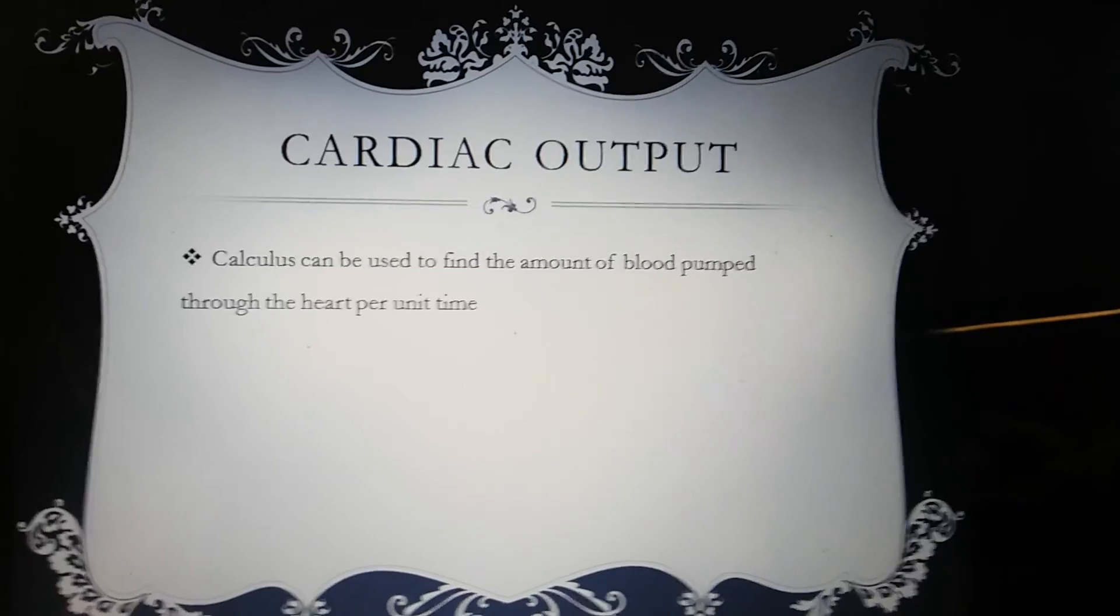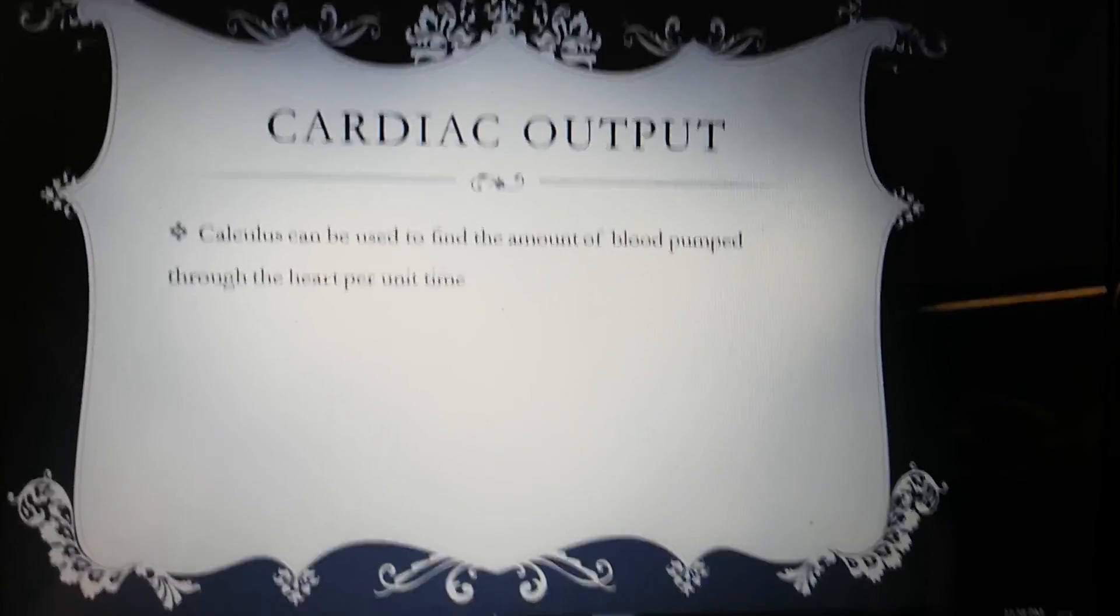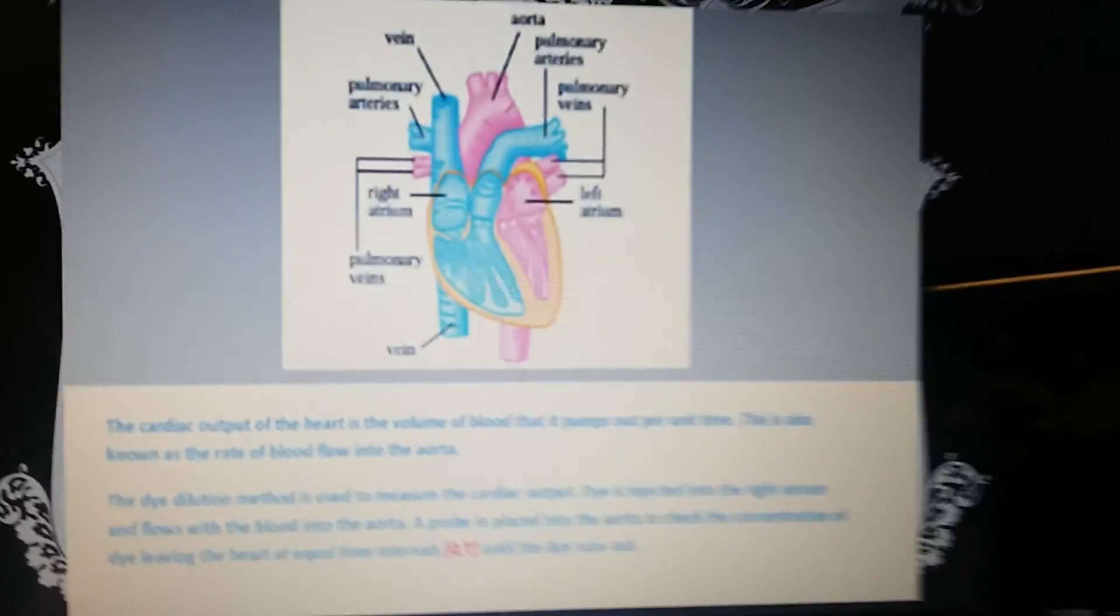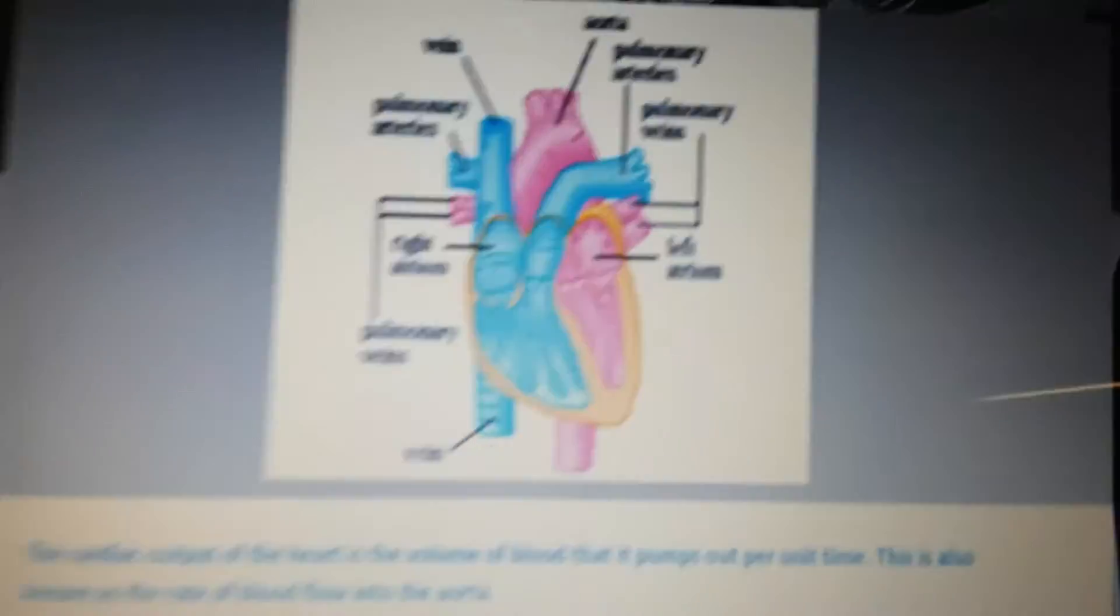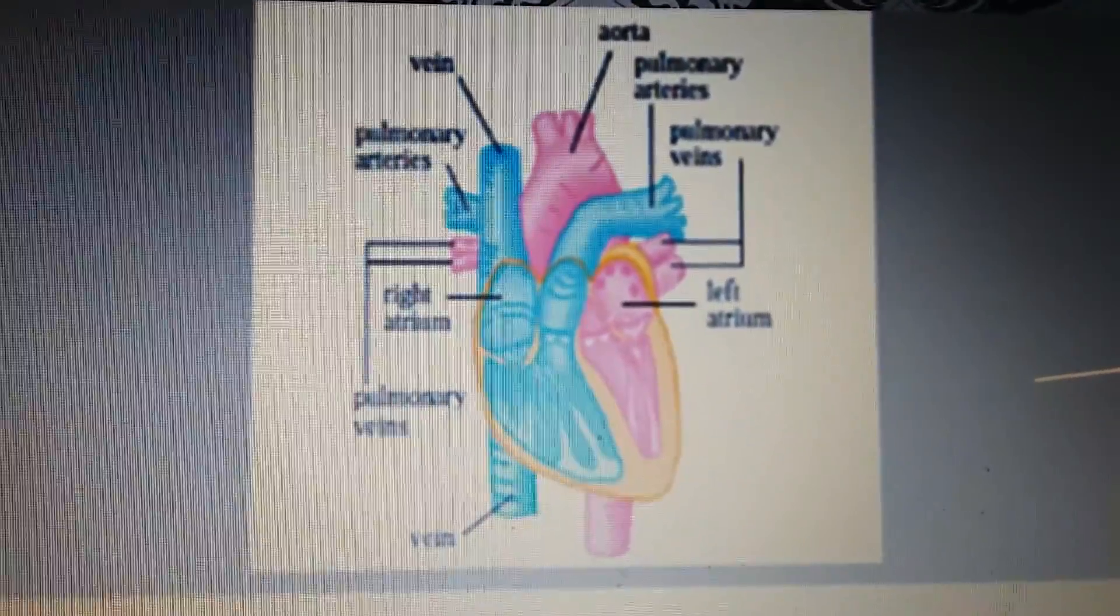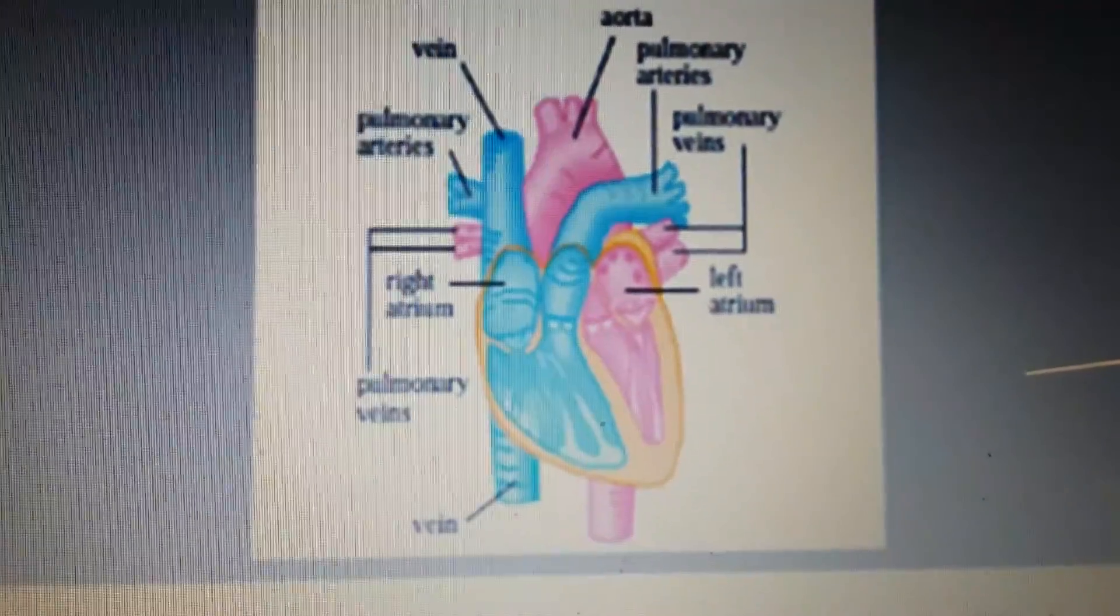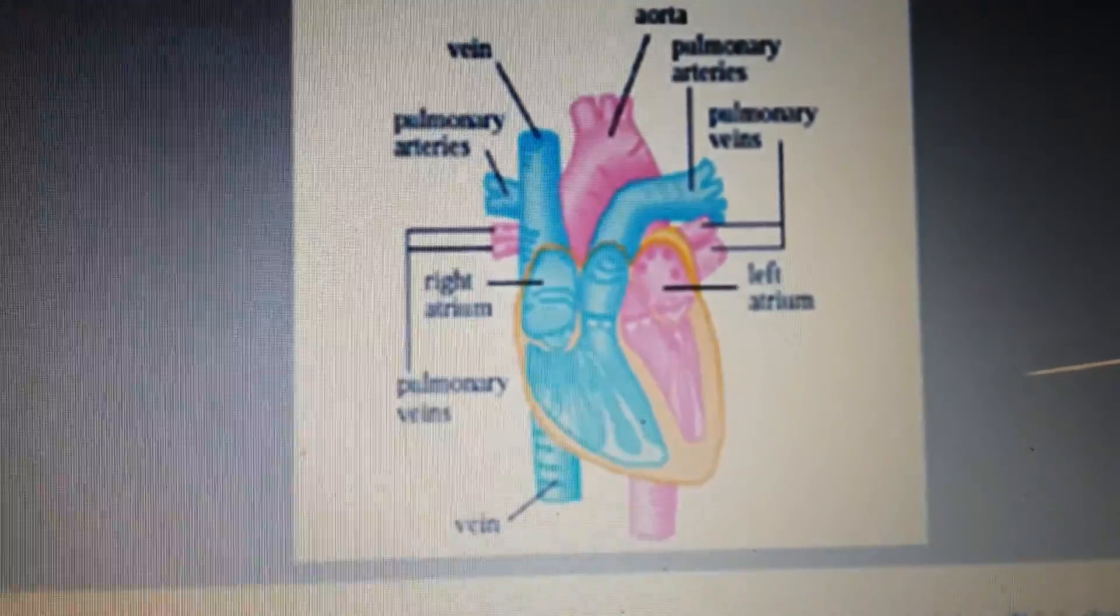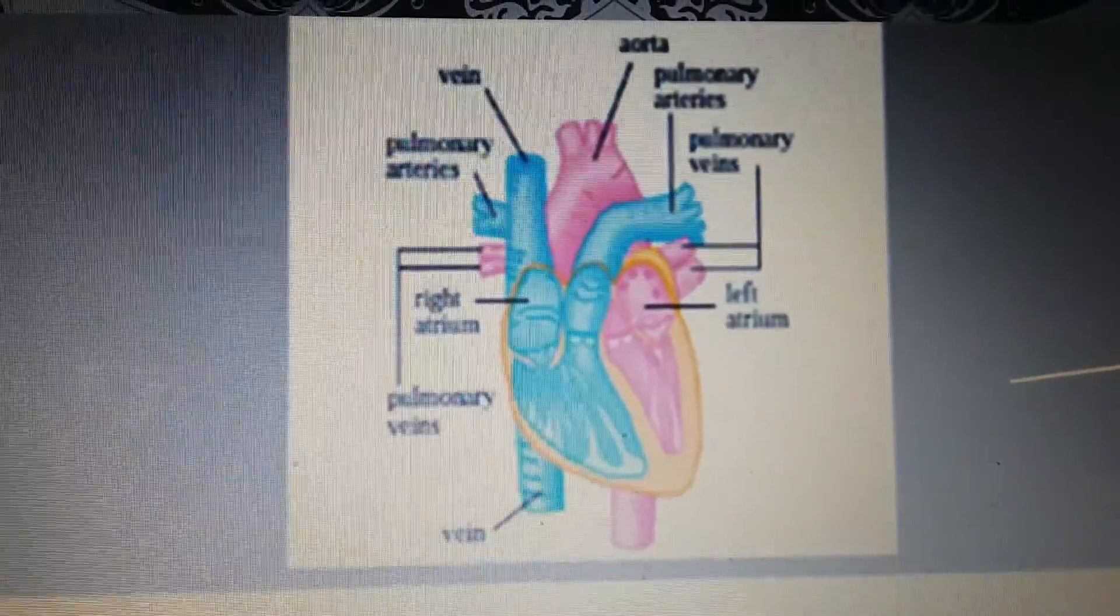Now, as well as cardiac output, calculus can be used to find the amount of blood pumped through the heart per minute, per unit time. This is a heart. This is something I've been learning throughout my college career in human growth and development and in other classes, human health.